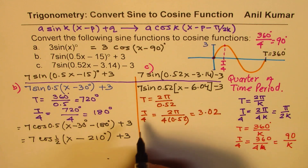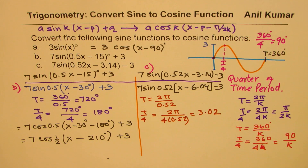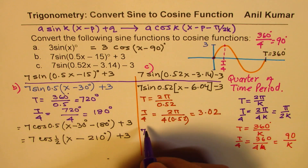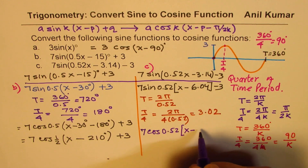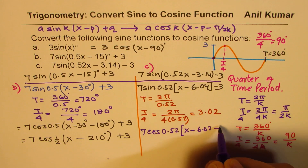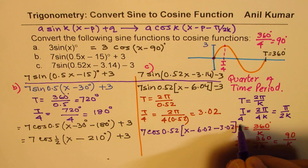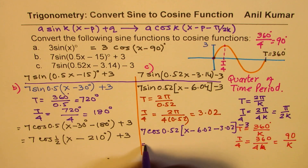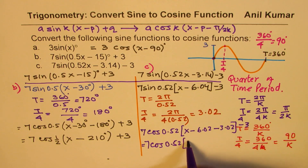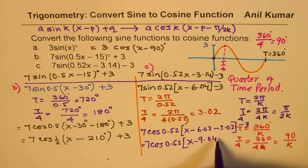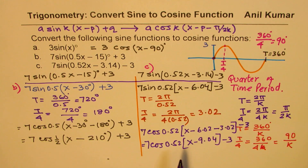So that becomes the quarter of the cycle for this particular wave. As a cosine function, with amplitude remaining the same: 7 cos(0.52(x - 6.04 - 3.02)) - 3, which gives 7 cos(0.52(x - 9.04)) - 3. That is how you convert a sine wave into a cosine wave.